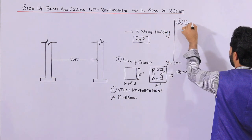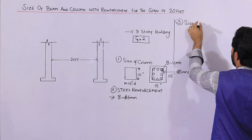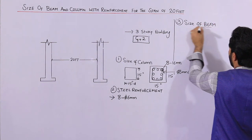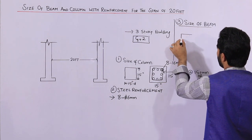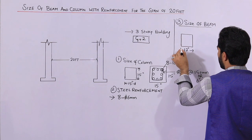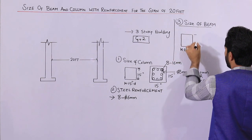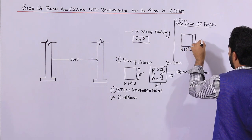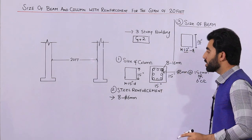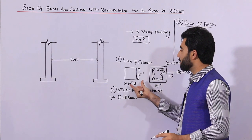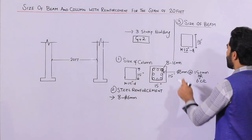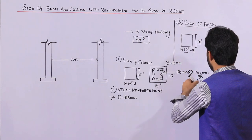Now for the size of the beam: you can keep the beam size at 12 by 16 inches. The width is 16 inches and the width should not be less than 12 inches, for a 15 by 15 inch column with a span between two columns up to 20 feet. So the beam size is 12 by 16 inches.